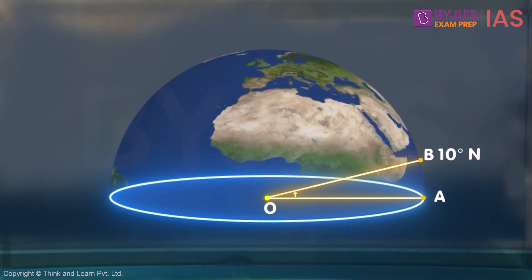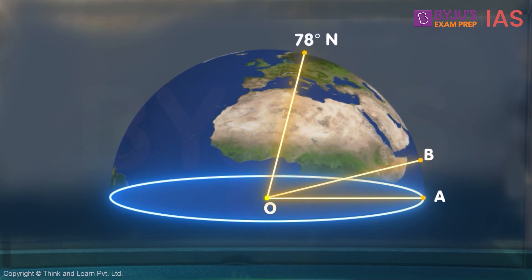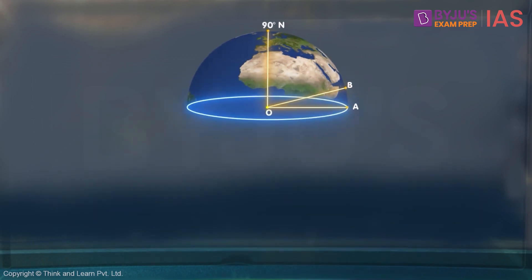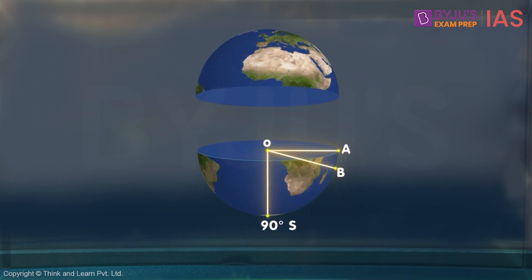If I keep moving up along the earth, the angle will keep increasing till I reach the north pole, where this angle becomes 90 degrees. The same thing happens in the southern hemisphere as well.